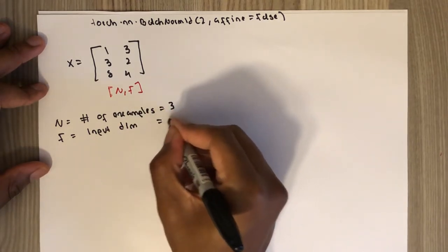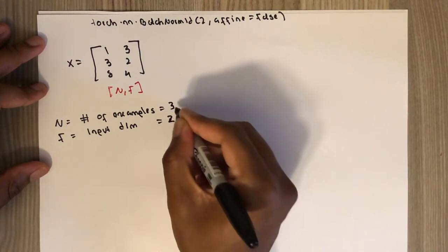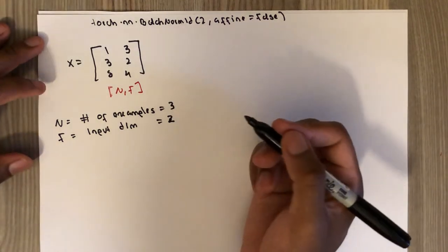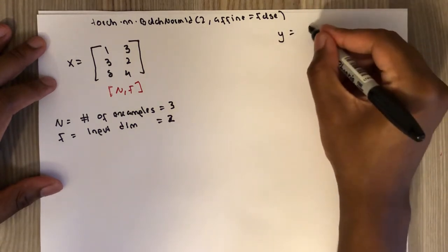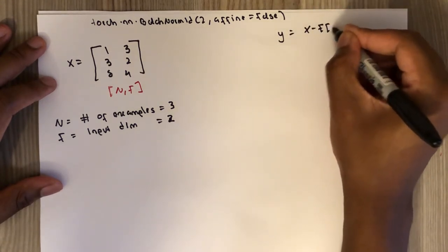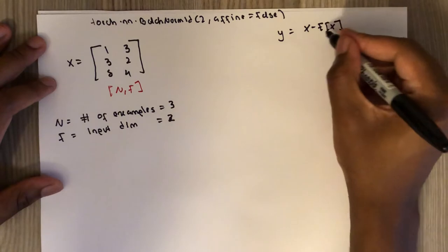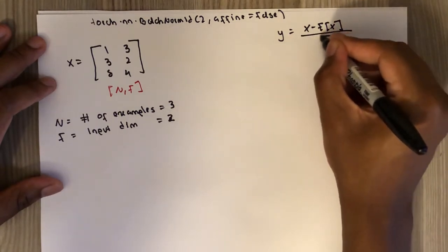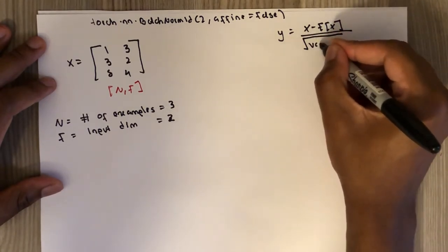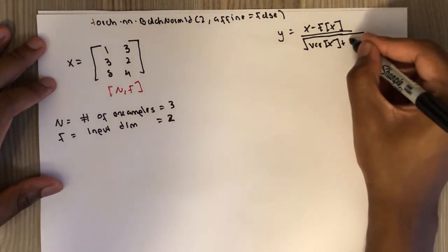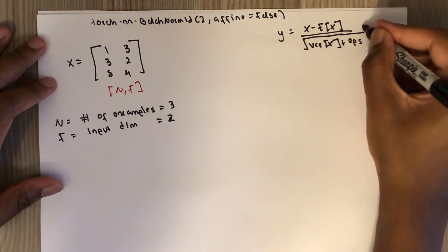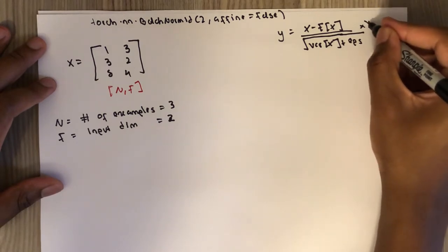N is the number of examples, F is the input dimension. In this example, 3 and 2. And the formula is essentially something like this: X minus the expected value of X, divide by square root of the variance of X plus epsilon, times gamma.